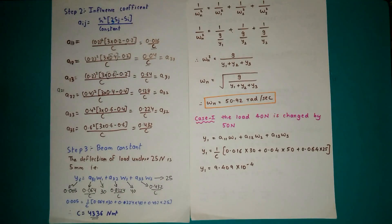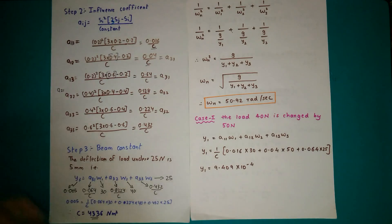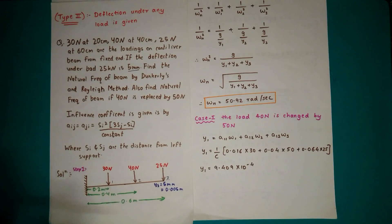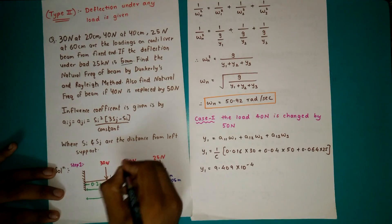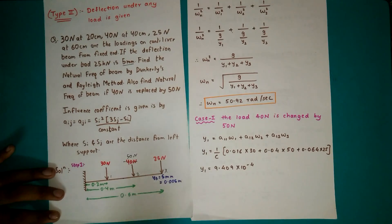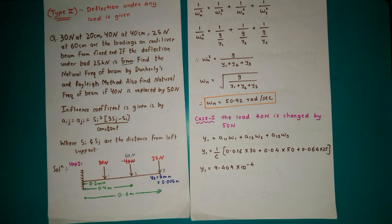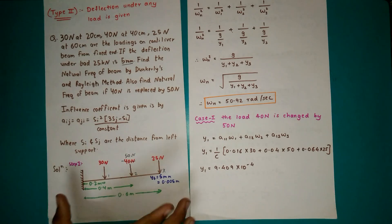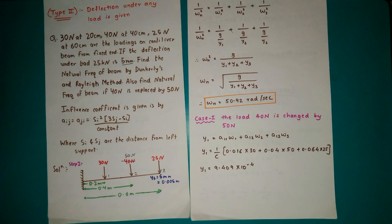In the second part, it is said that the load 40 N is changed to 50 N. As you can see in the diagram, the load W2 at 0.4 m is replaced by 50 N. The distances are not changed — therefore the influence coefficients will remain the same. Only the load W2 will be different. So we need to find Y1, Y2, and Y3 with the new load value for using in Rayleigh's formula.